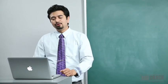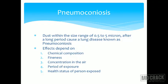Pneumoconiosis is an umbrella diagnosis — it simply means a lung disease due to inhalation of particulate matter. Dust within the size range of 0.5 to 5 microns, after a long period of exposure, causes pneumoconiosis. Both organic and inorganic dust cause disease but generically the condition is called pneumoconiosis. The effects on the lung depend on the chemical composition of the dust inhaled.